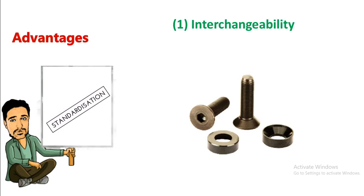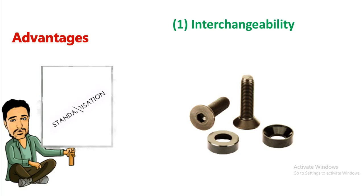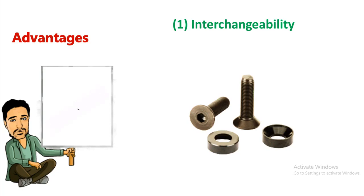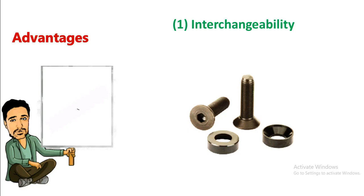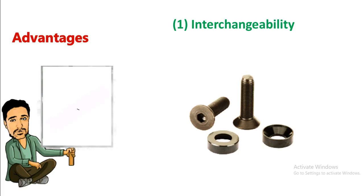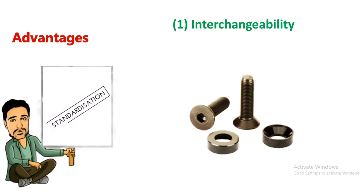The first advantage of standardization is that we can get interchangeable parts. For example, in a piston-cylinder assembly, if we randomly select a piston and randomly select a cylinder and they successfully assemble, then they are interchangeable parts. Interchangeability means random selection of parts that assemble properly. Standardized parts give us this advantage of interchangeability.